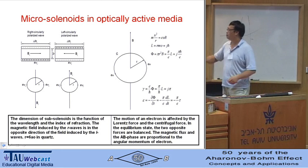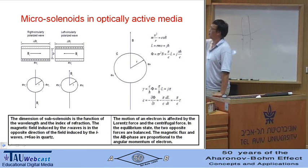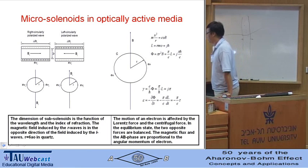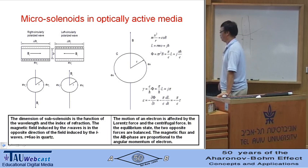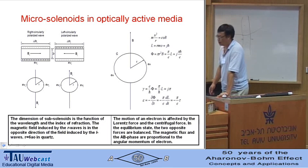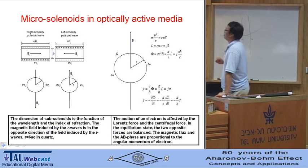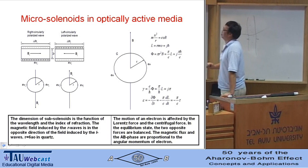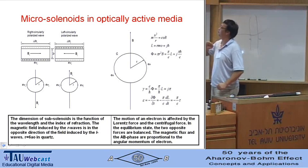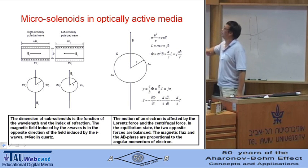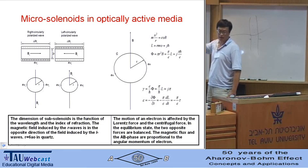The motion of the electron along the helical path in space is affected by two forces: one is the Lorentz force and the other is the centrifugal force. In the equilibrium condition, the two opposing forces are balanced.